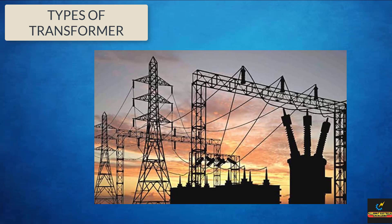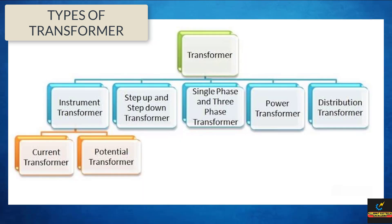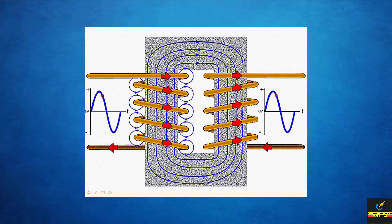Now, we are talking about the types of transformer. There are various types of transformer used in electrical power systems for different purposes, like transmission and distribution of electrical power. The different types of transformer are mainly instrumental transformer, step-up, step-down transformer, single phase and three phase transformer, power transformer, and distribution transformer. And under the instrumental transformer, there are two types: one, current transformer and two, potential transformer. All the transformers are employed for different purposes, but the working principle is the same for each and every transformer.